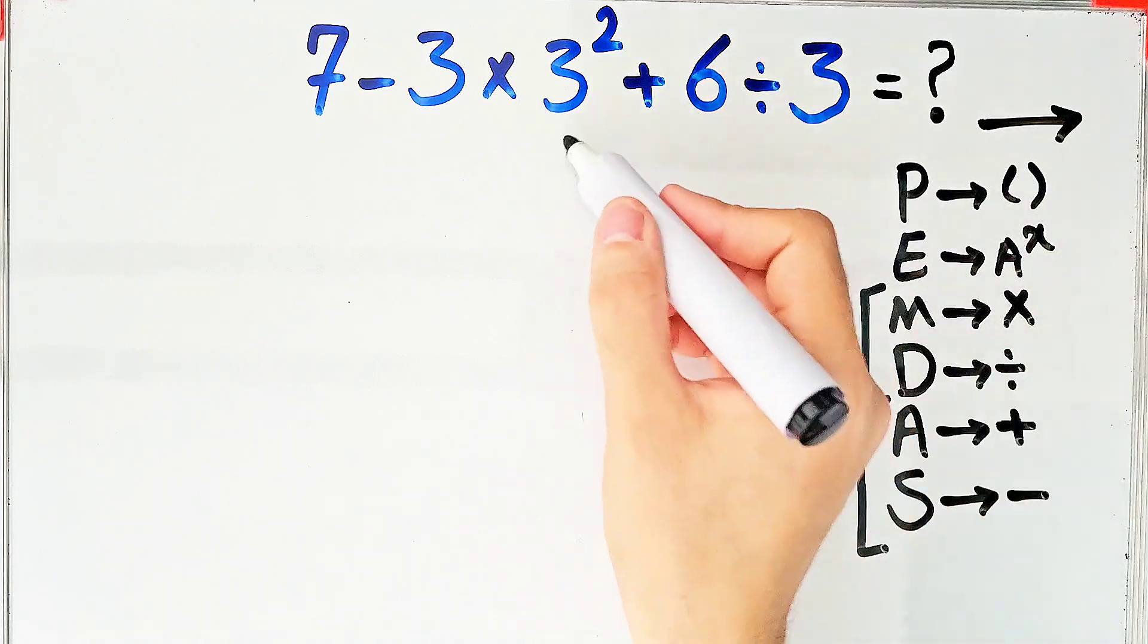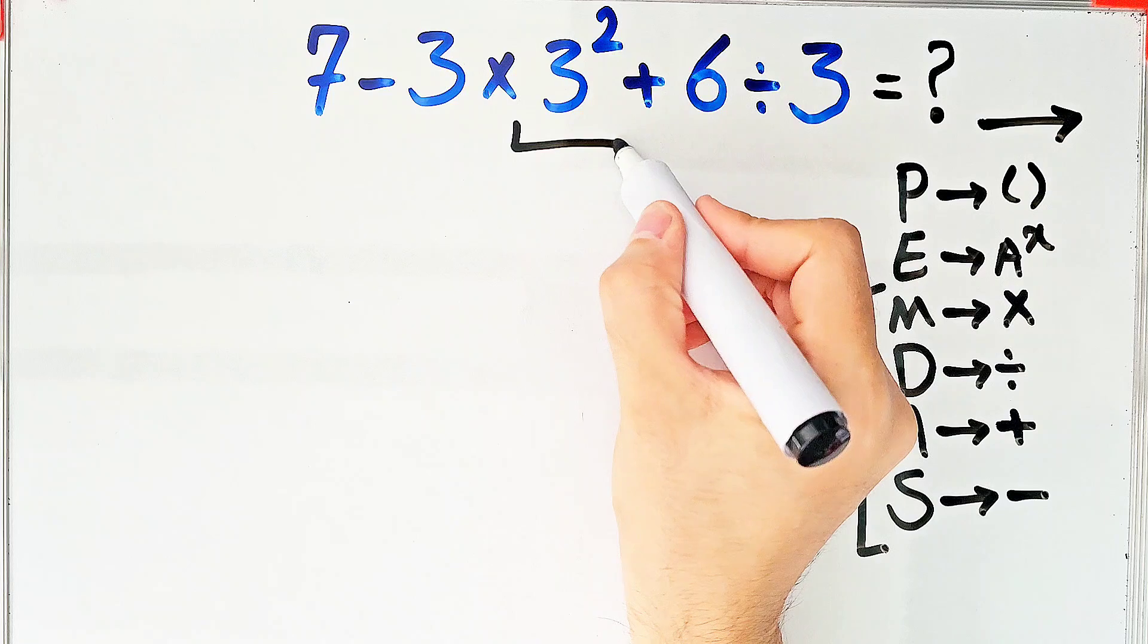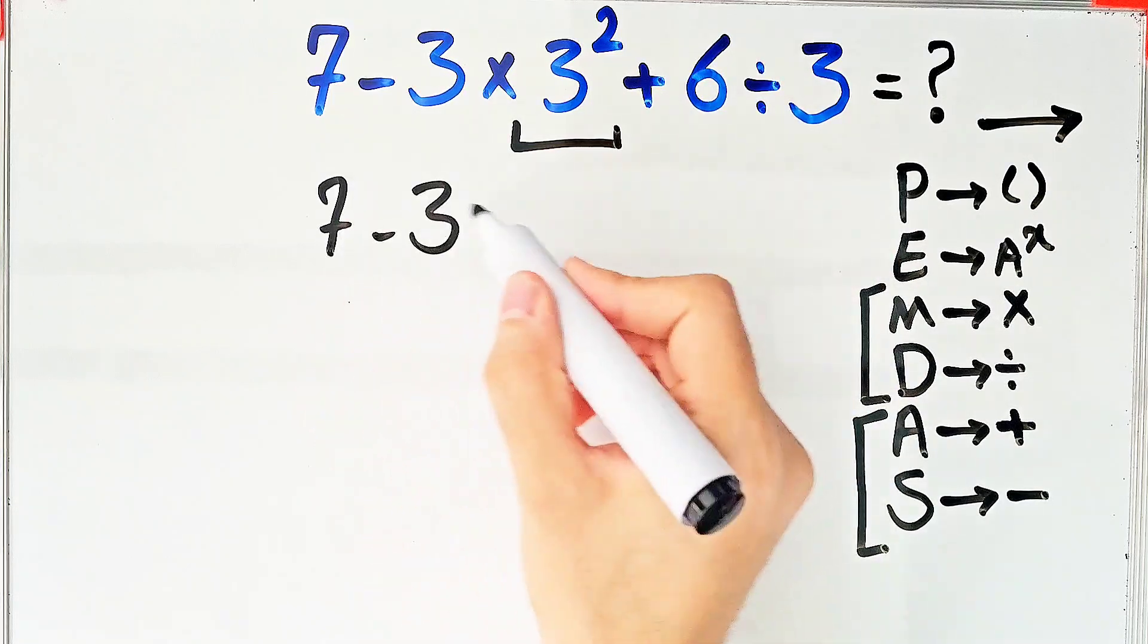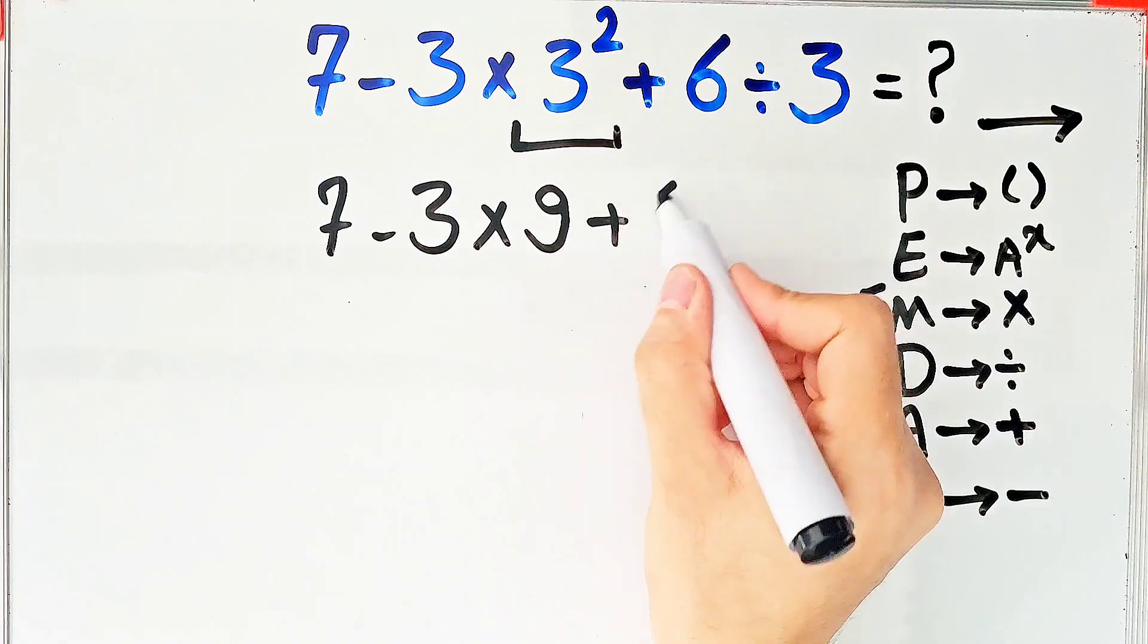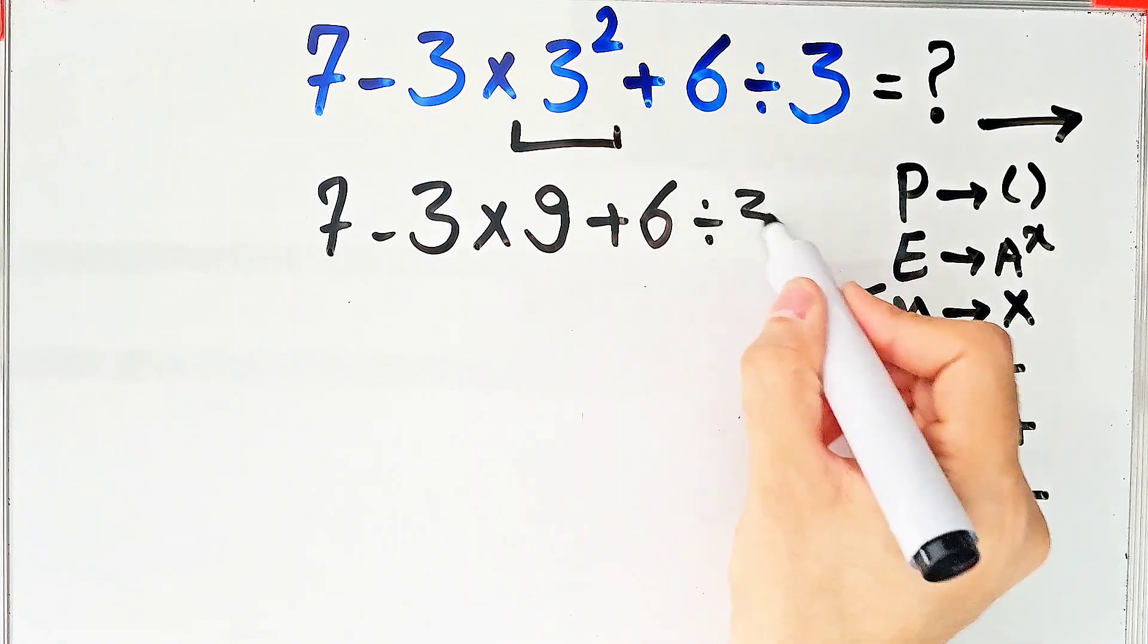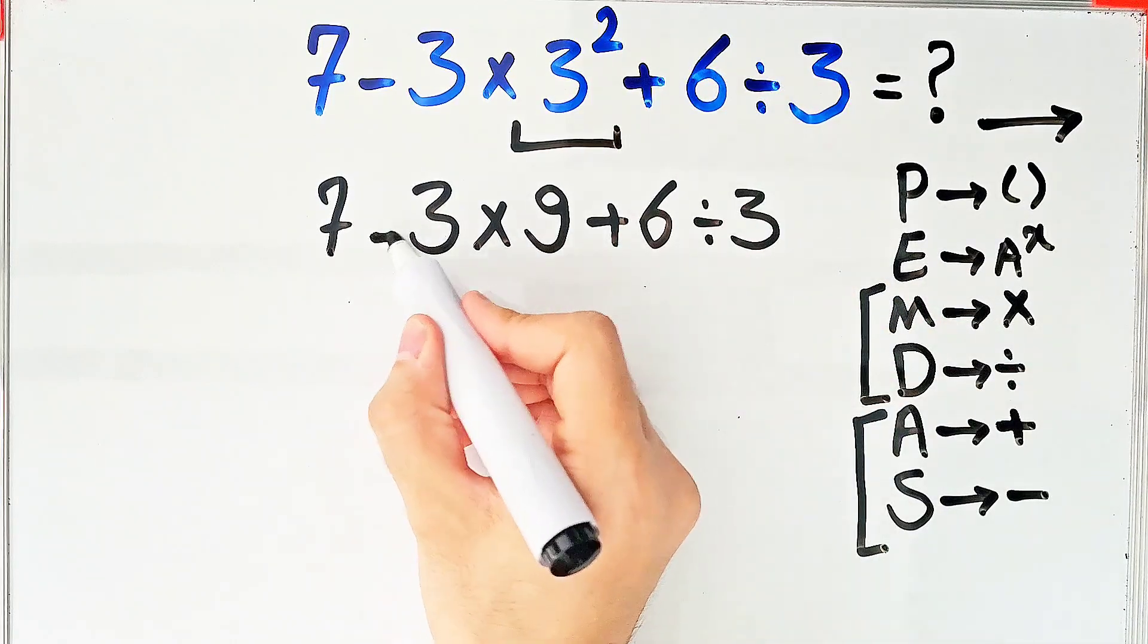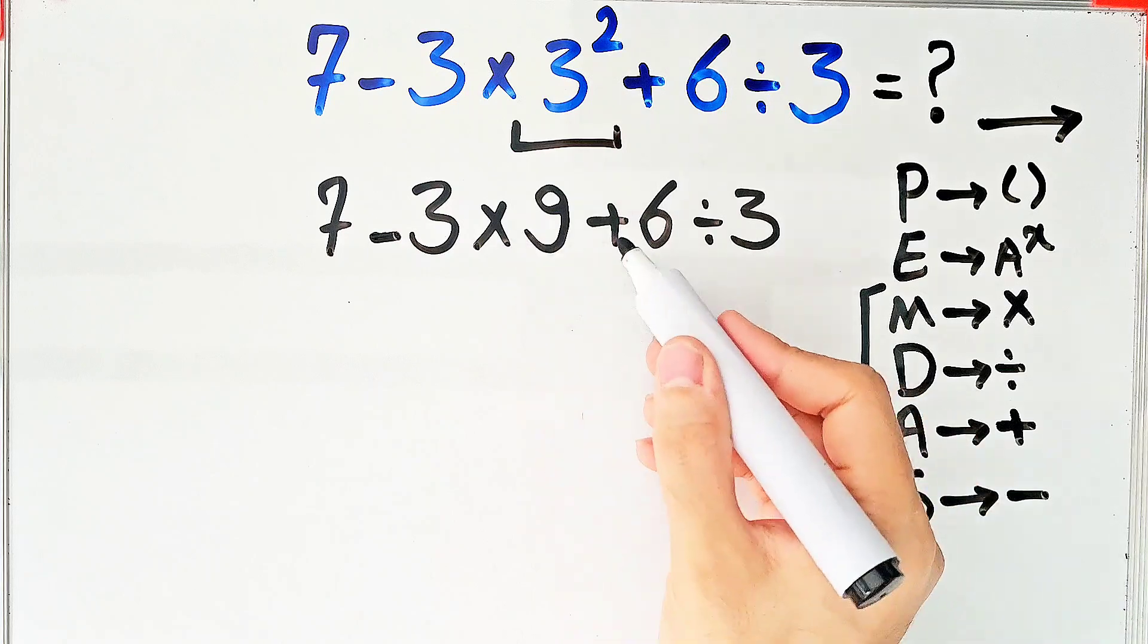According to the PEMDAS rule, first we simplify this exponent. We have seven minus three, then times three to the power of two, which equals nine, then plus six divided by three. Now we have subtraction, multiplication, addition, and division.